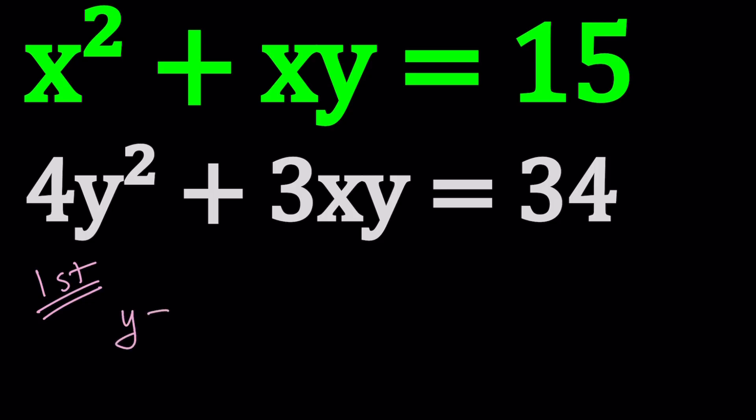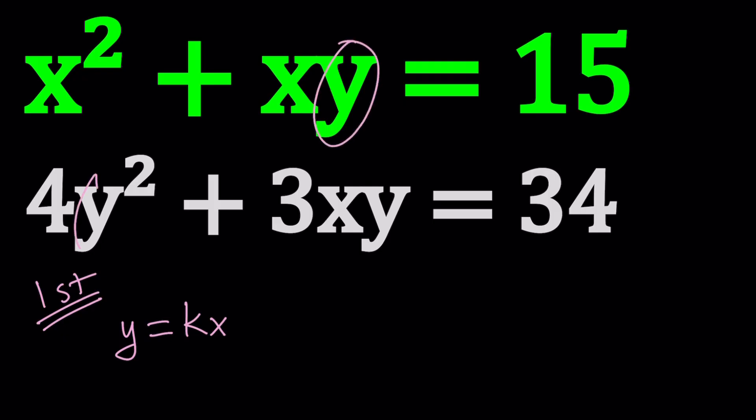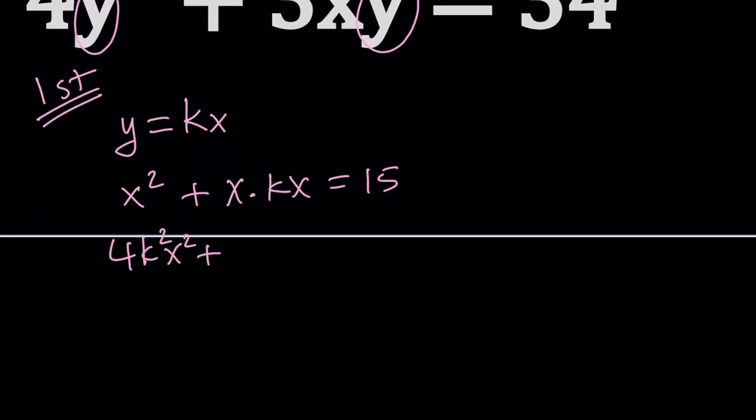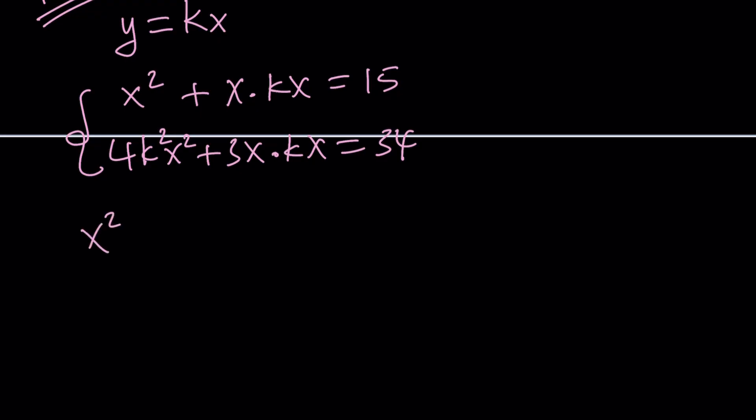It means that y over x or x over y can be turned into another variable, and that's going to make it easier to solve. We're going to come up with a single equation in a single variable. I'm going to replace y with kx. Don't get me wrong, k is not a constant, it's just another variable. But we hope it's a constant, so we can plug it back in and solve it. If you replace y with kx in three different places, you get x² + x·kx = 15, and 4k²x² + 3x·kx = 34.